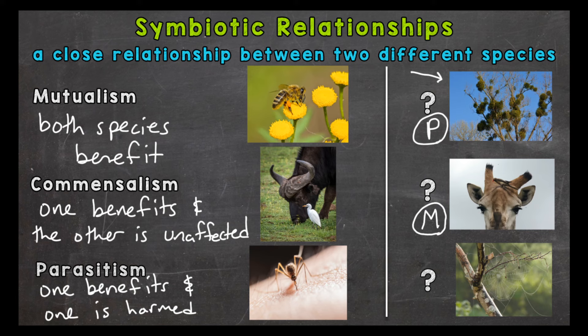Lastly we have a spider and a tree with a spider web. The spider has a home with that tree — it's benefiting from the tree. The tree is unaffected. So one species benefits, the spider, and the other is unaffected, the tree. So this is commensalism.